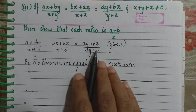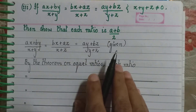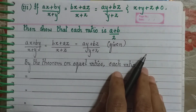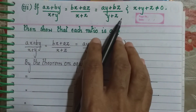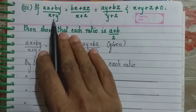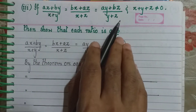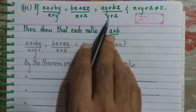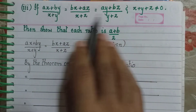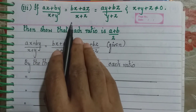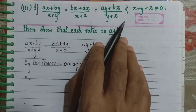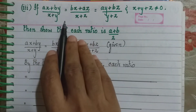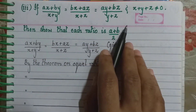So in the numerator, adding all three gives (X + Y + Z)(A + B). Now looking at the denominators: we have (X + Y), (X + Z), and (Y + Z). Adding these gives 2X + 2Y + 2Z, because each variable appears twice. Taking 2 common out, the denominator becomes 2(X + Y + Z).